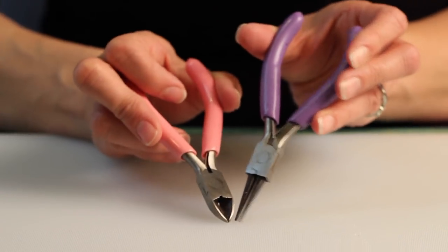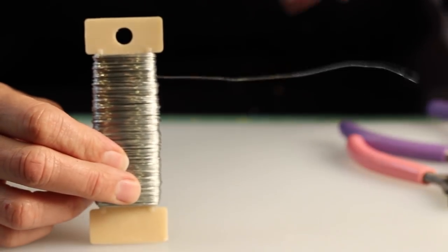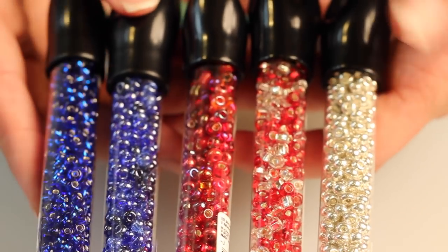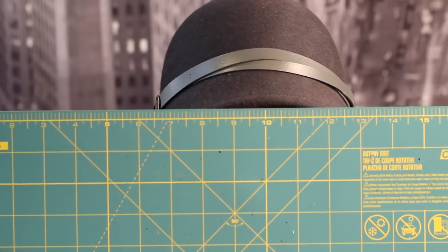Wire cutters and some round nose pliers. Some wire that's 26 gauge and some seed beads, and I've got these in different colors of red, white, and blue. And you'll need something to measure with.